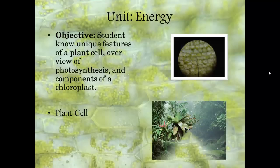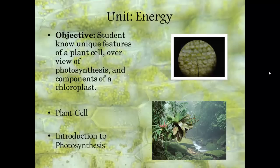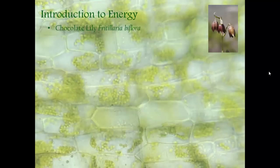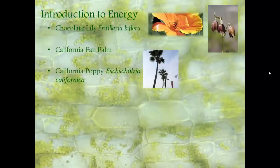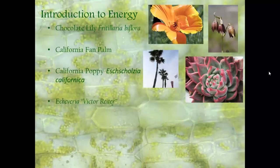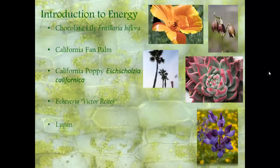We're going to start off the introduction to photosynthesis with a picture of biomes in a forest. These flowers here are native to California: the chocolate lily, Fritillaria biflora, the California fan palm, our beloved California poppy, the Echeveria, which is in the succulent plant family, and the lovely lupine.